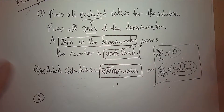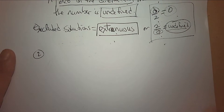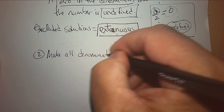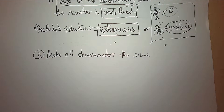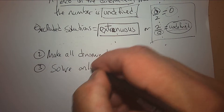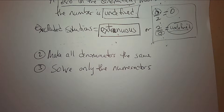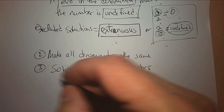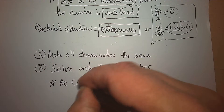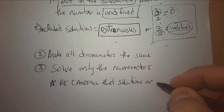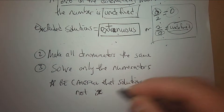That's just step one. Step two: we're going to make all denominators the same — we're going to make common denominators. Step three: we're going to solve only the numerators. If the denominators are the same, I only have to look at the numerators once they've been set up. And be careful that solutions are not extraneous.